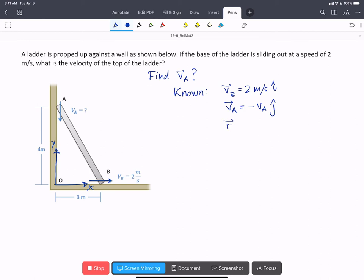And we can say that R of A with respect to B, in this case we're going from a known at B to an unknown at A, is going to be minus 3i plus 4j meters.